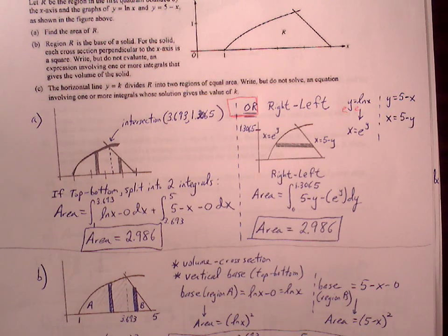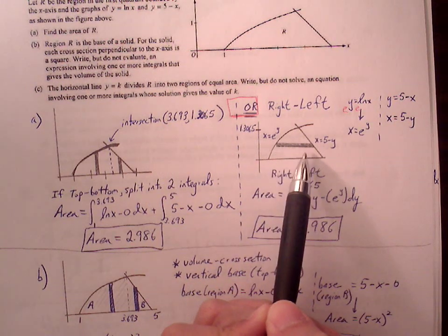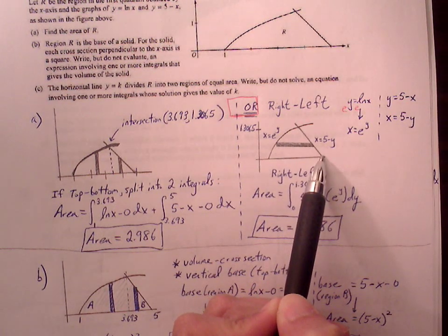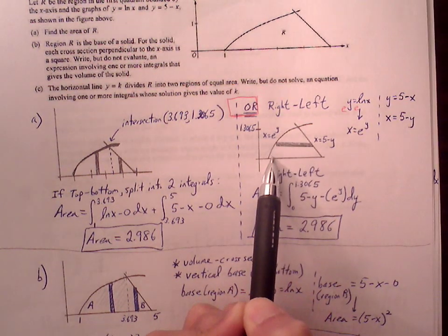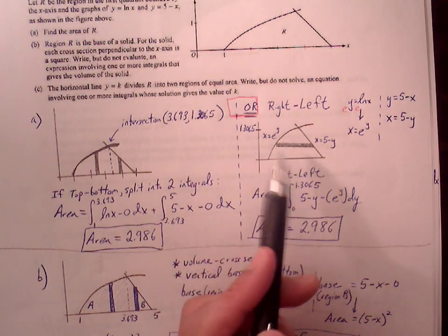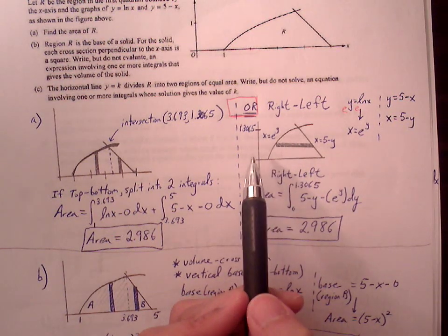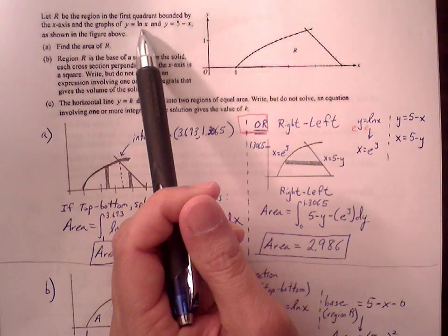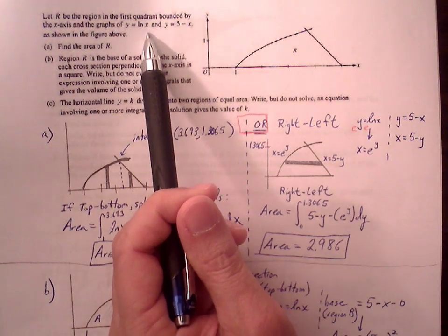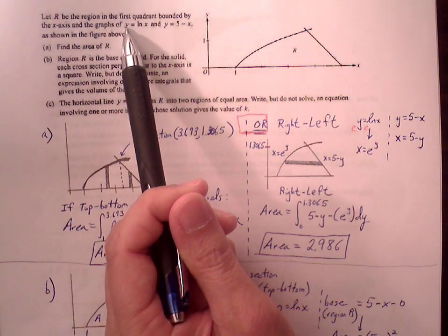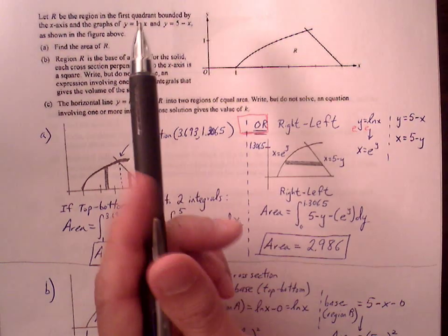Or we could do right minus left. The advantage is we only need one definite integral, because the graph on the right is always consistent, and the curve is always the graph on the left. There's no sudden change as we move through. But that requires some adjustments, because the equations we see are not set up for right minus left. We have to get both equations as x equals. The y equals form is for top minus bottom. x equals form is for right minus left.